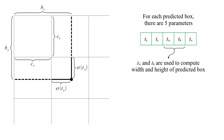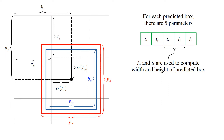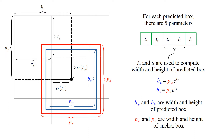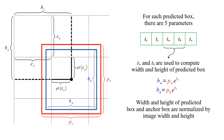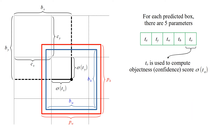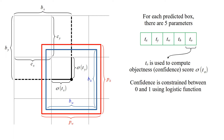Tw and Th are used to compute the width and height of the predicted box. The anchor box is shown in red and the predicted box is shown in blue. YOLO version 3 does not predict width and height directly — it predicts relative to anchor boxes. This way the network learns detection more easily because it works with reference prior boxes. Width and height of the predicted box and anchor box are normalized by image width and height. To is used to compute the objectness or confidence score, which is constrained between 0 and 1 using a logistic function.